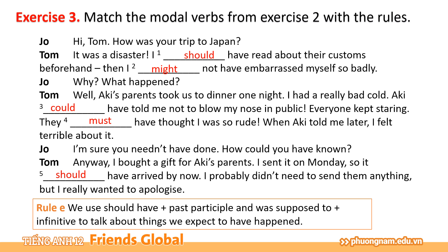Và cuối cùng, đối với Rule E: should have cùng với quá khứ phân từ hoặc là were supposed to với động từ nguyên mẫu có thể dùng để nói về những điều mà chúng ta cho rằng đã xảy ra. Ví dụ cuối cùng: it should have arrived by now — với câu đầy đủ là I sent it on Monday, tôi đã gửi nó vào thứ hai, nó đáng lẽ ra đã nên đến nơi. Đây đang cho thấy một cái ý kiến của tác giả cho rằng một điều gì đó đáng lẽ đã nên xảy ra.